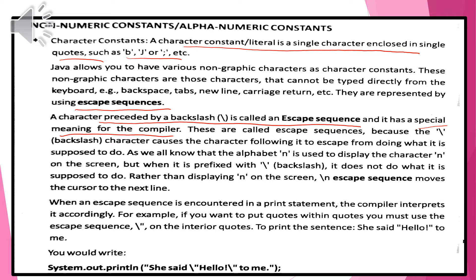Now, what is the character constant? The character constant is a constant which bears a single character enclosed in a single quote. For example, if my data is 'section' and it is assigned the value A, then I write: section equals A within single quotes. Remember, when a string is assigned to data, it will be enclosed with double quotes. Java also allows non-graphic characters as character constants.